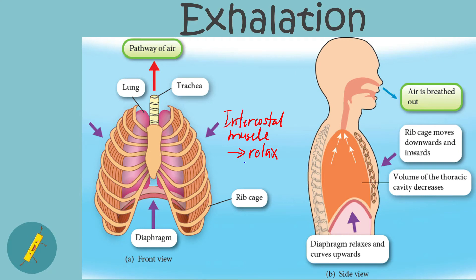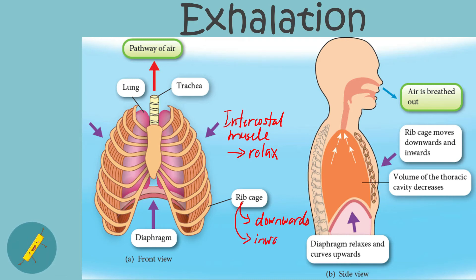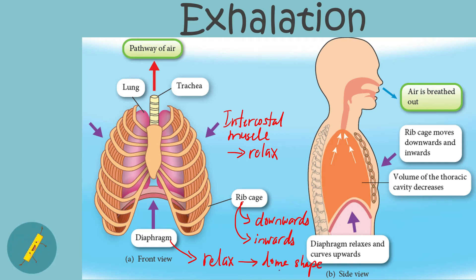During exhalation, the intercostal muscles relax. This causes the ribcage to move downwards and inwards. At the same time, the diaphragm also relaxes. This causes the diaphragm to return to its original shape.